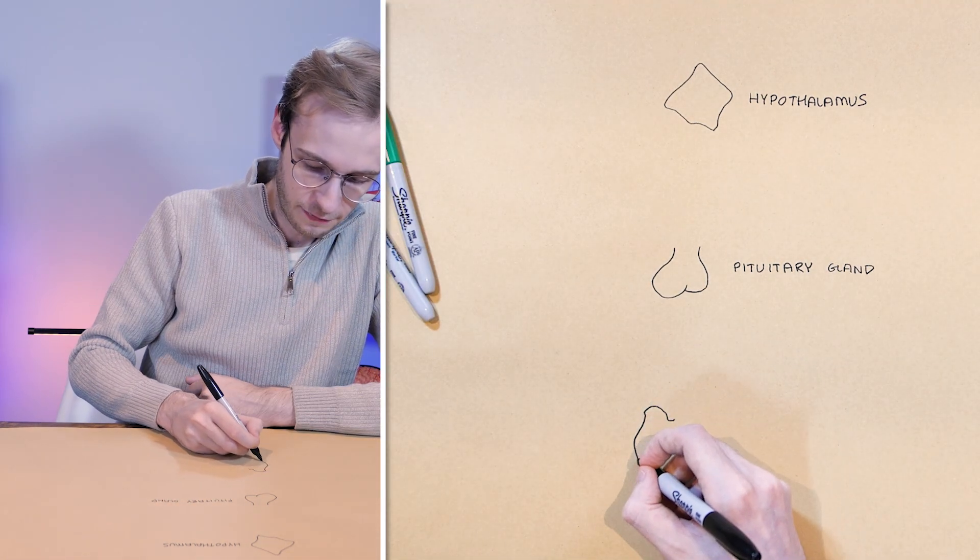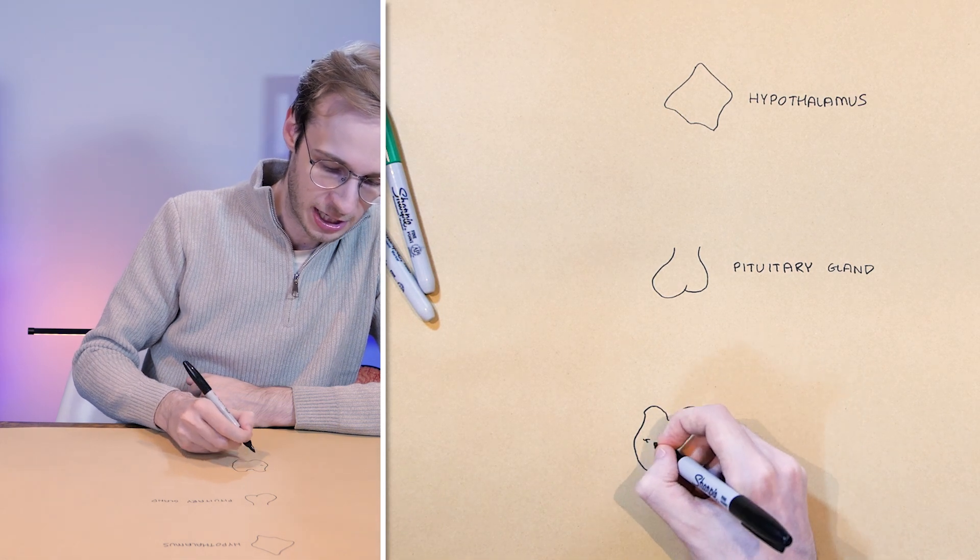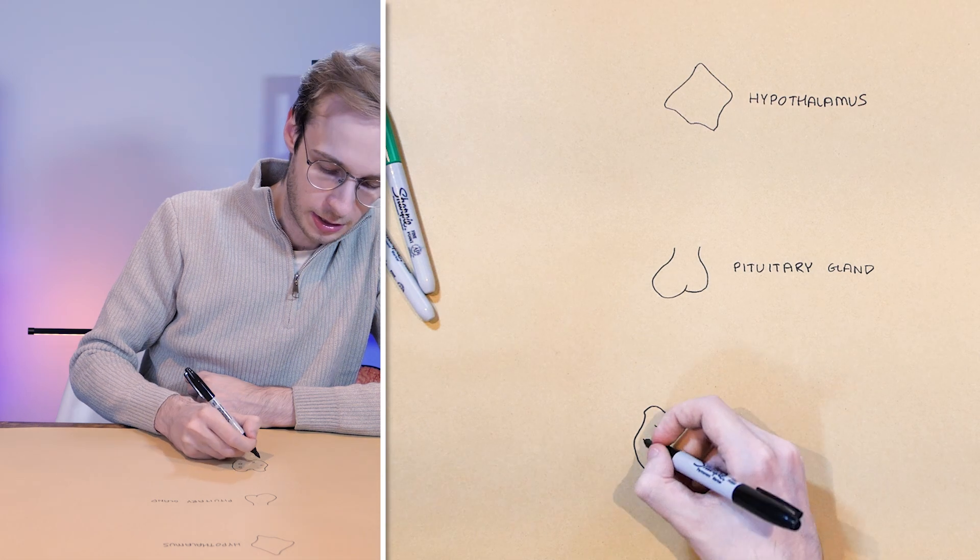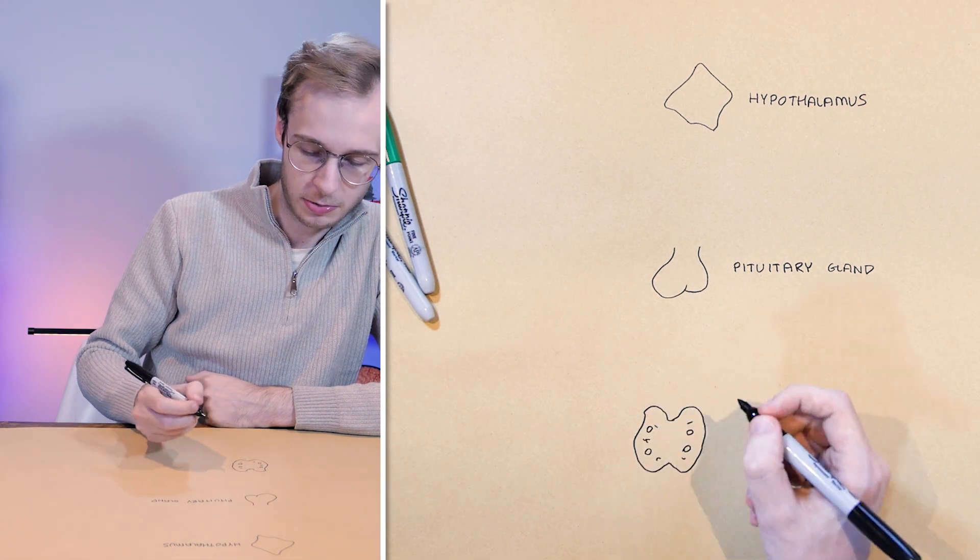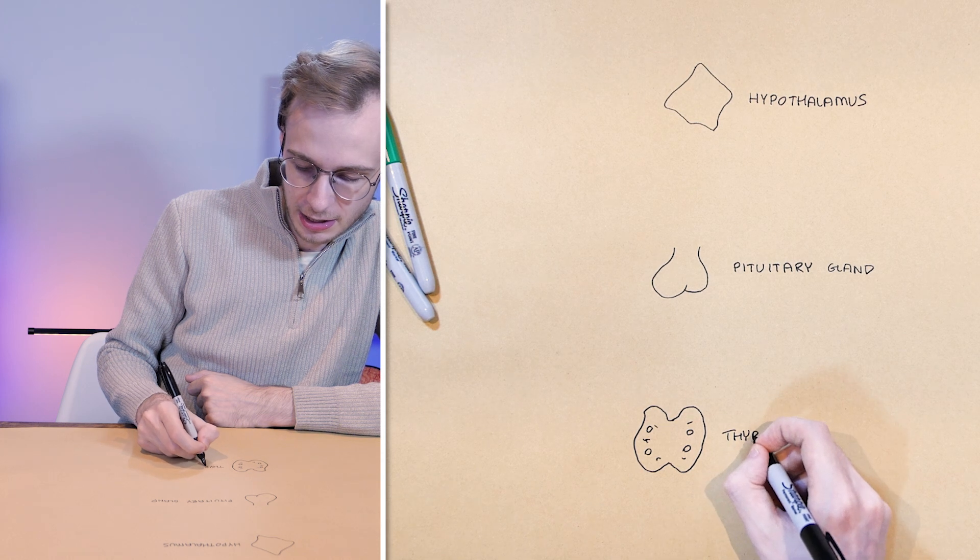And then finally we have the thyroid gland itself, a sort of butterfly shape. We'll give it some little lines. And our parathyroids as well, just to remind ourselves that they exist.